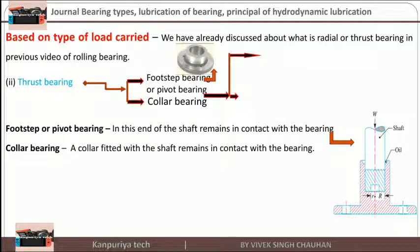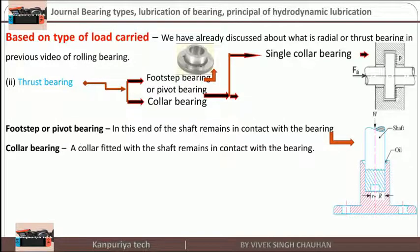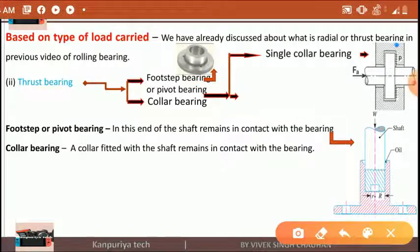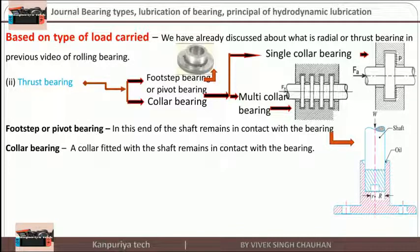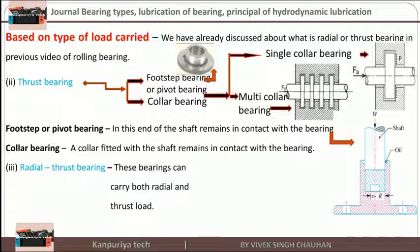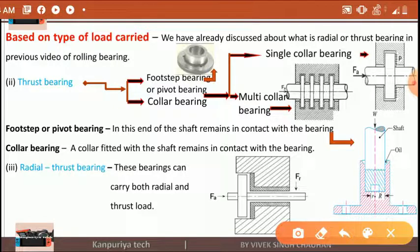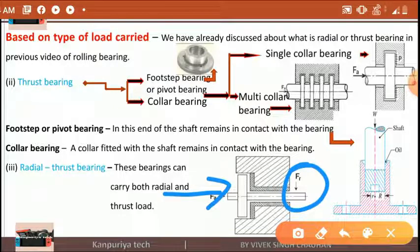In a collar bearing, the collar fitted with the shaft remains in contact with the bearing. It is also divided into two types. The first is single collar bearing — in which a single collar is provided on the shaft. The second type is multi-collar bearing — in which multiple collars are provided on the shaft. The third type is radial-thrust bearing, which is a combination of radial and thrust bearing and can carry both radial and axial load.